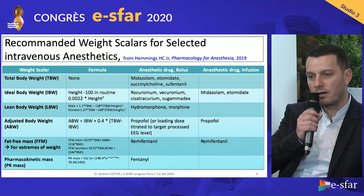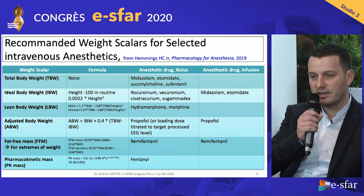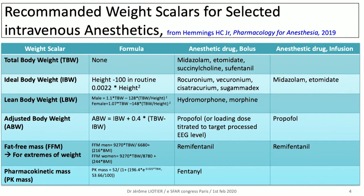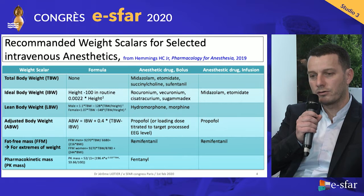That's why there are recommended weight scalars for selected intravenous anesthetics. There are many formulas and some are very complex. In clinical routine, clinicians use total body weight — recommended for midazolam, etomidate, succinylcholine, and sufentanil. For the others, they use ideal body weight with a complex formula.